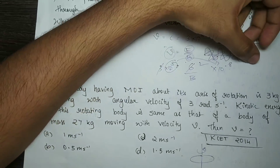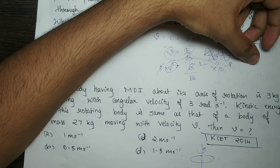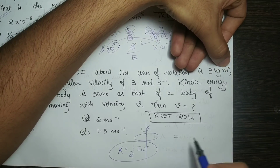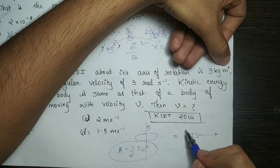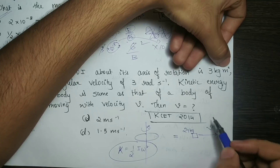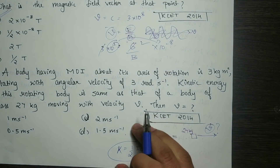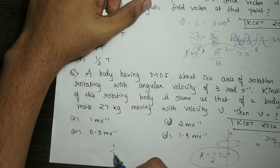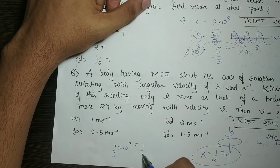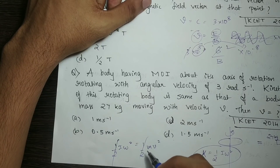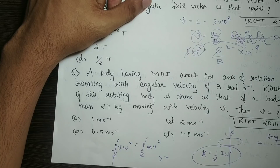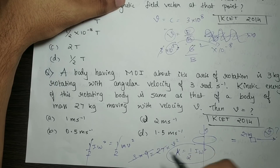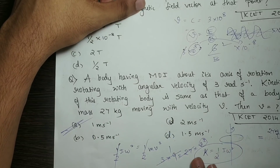The kinetic energy is KE = ½Iω², where I is the moment of inertia and ω is the angular velocity. Setting ½Iω² = ½mv², with I = 3 and ω = 3, we get 3 × 9 = 27 = 27 × v². So v² = 1, therefore v = 1 m/s. Option is correct.